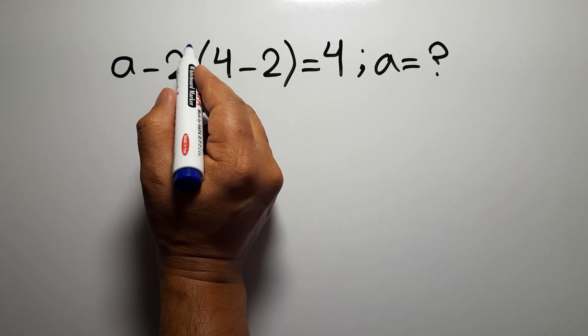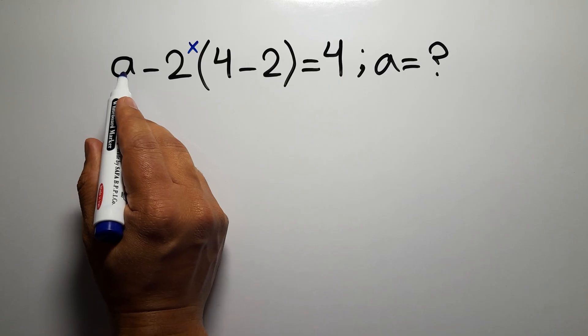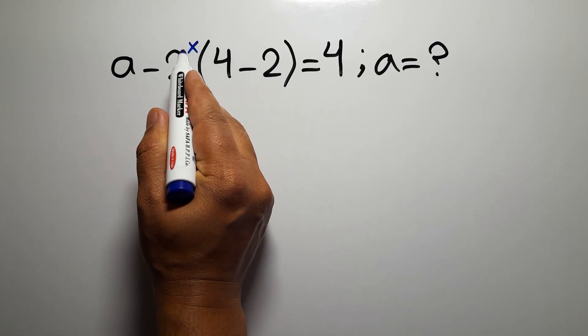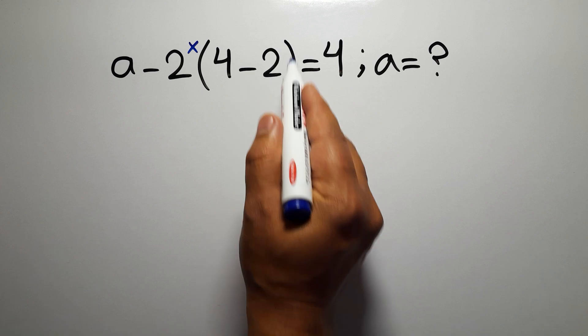So here we have a multiplication. Therefore, on the left hand side, we have this subtraction, this multiplication, and this parentheses.